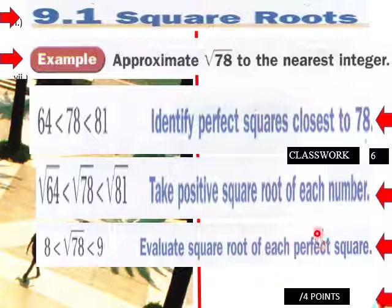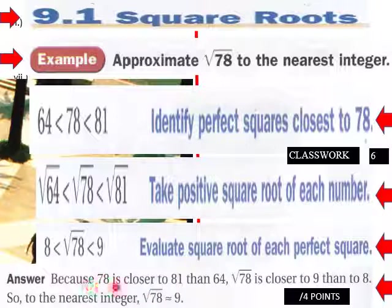So because 78 is closer to 81—it is close to 81, is three away; 64 is 14 away—so it is closer to 81 than 64. Square root of 78 is closer to 9 than 8. So the nearest integer, so the nearest integer that √78 is equal to 9. So that would be the process of reasoning that you would come up to the nearest integer of a square root of a number here.